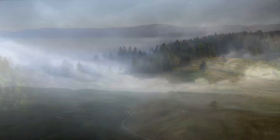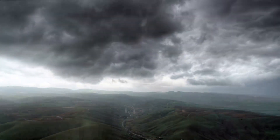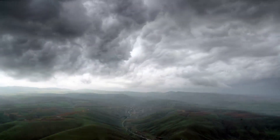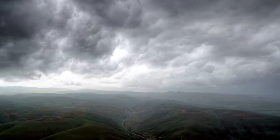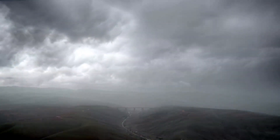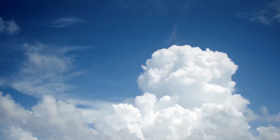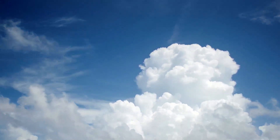As water vapor continues moving up into the atmosphere, it reaches cooler temperatures and turns back from a gas into a liquid. This is called condensation. Water here is now made up of tiny liquid water droplets. This condensation mixes with gases and dust particles to become clouds.